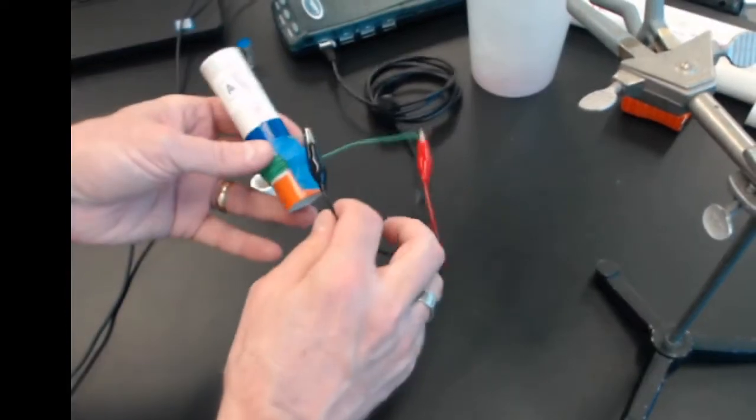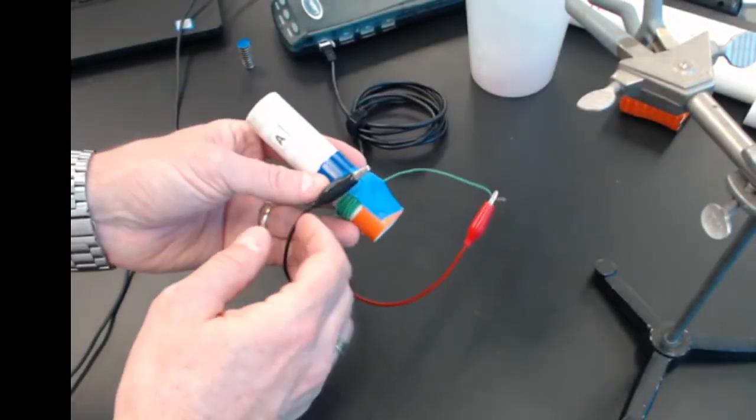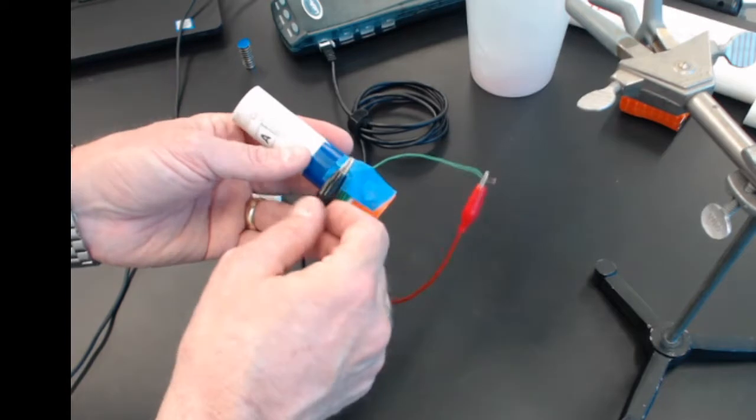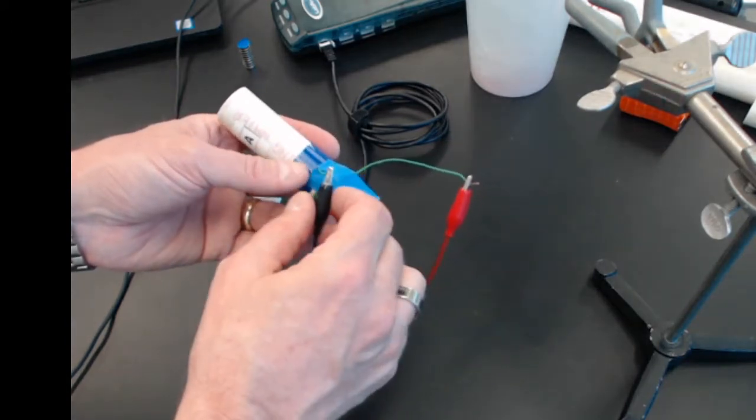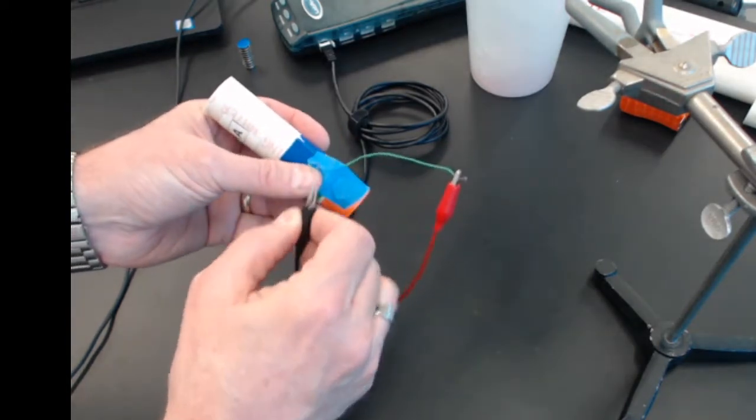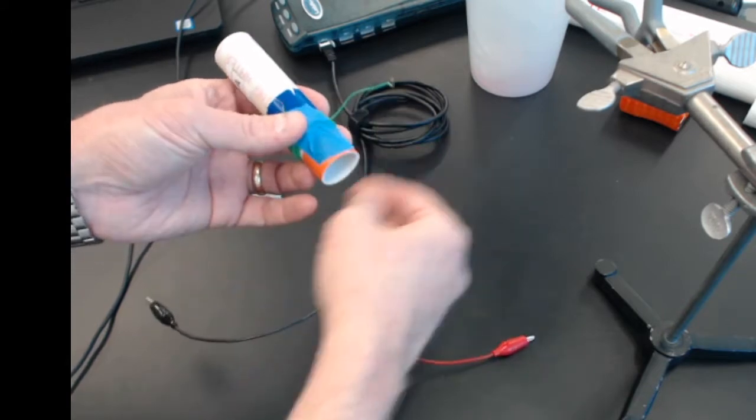First, before I take this apart, I'm going to note which wire I've connected to negative and which one to positive. The negative was the very first one I put down, and the positive was the wire that I wrapped over.